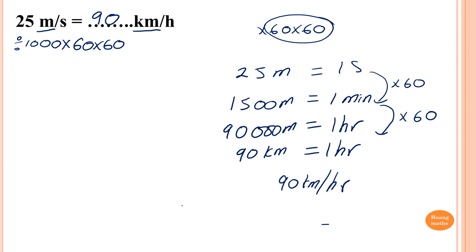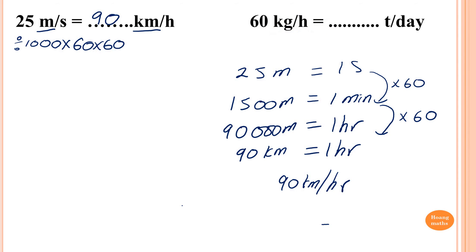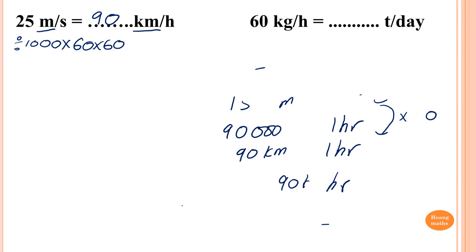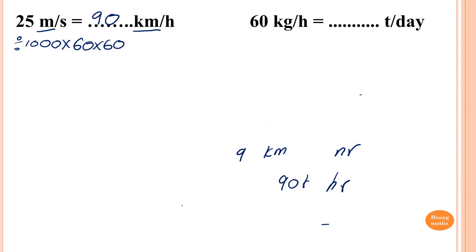So this is the long way, but it's easy to understand. With the shortcut, you just need to know the process. Now, 60 kilograms per hour — we want to convert to tons per day.